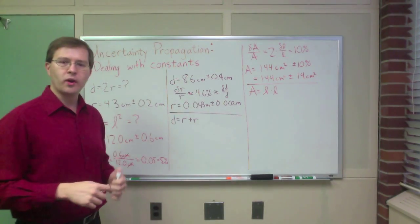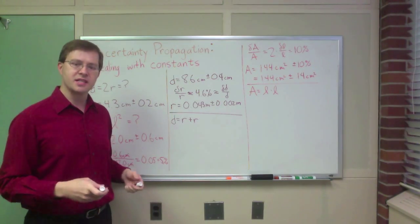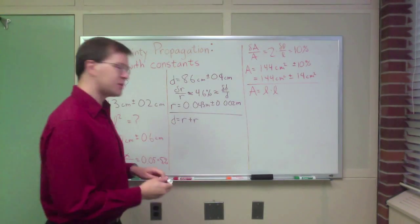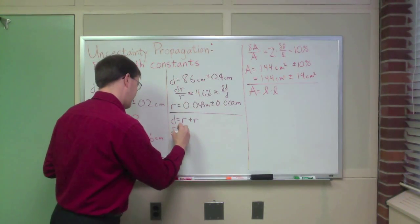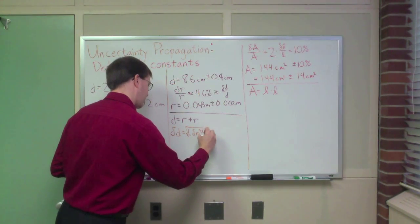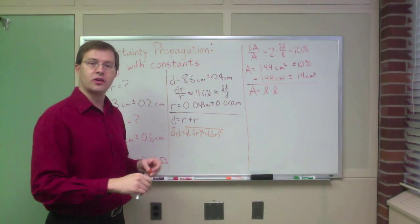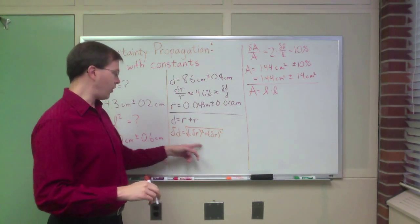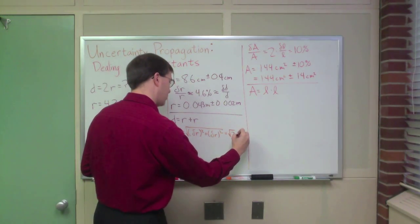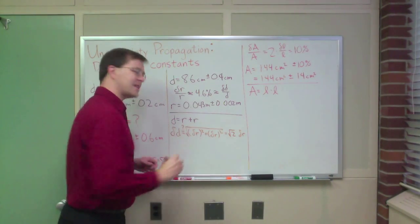This is the point where there's a subtlety to mention. You may be thinking to yourself, wait a minute, we've talked about uncertainties and sums before. Why is this not supposed to be given by delta D equals the square root of delta R squared plus delta R squared, because that's the rule for adding uncertainties in quadrature for a sum. And hey, since those are the same, this would just be the square root of 2 times delta R. Why isn't that the case?